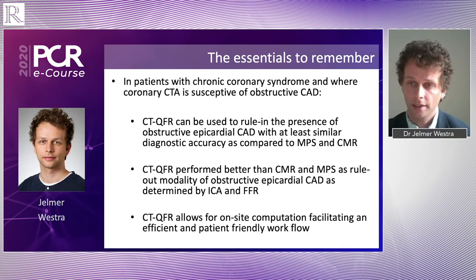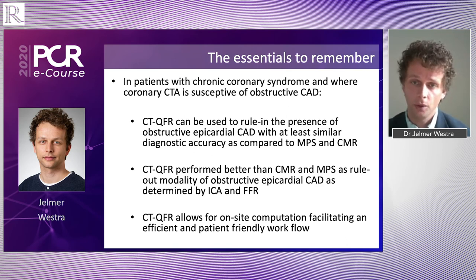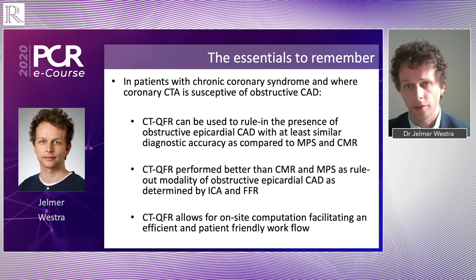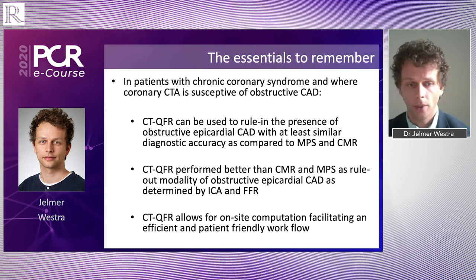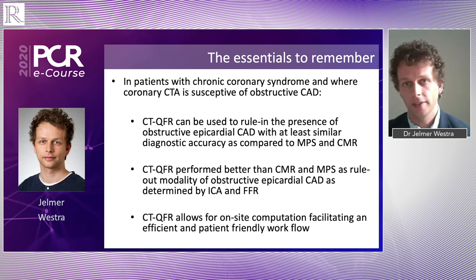The main message is that when looking for obstructive epicardial coronary artery disease in patients with new onset symptoms suggestive of coronary artery disease and with a low to intermediate pre-test risk, if you have a CT scan of good quality that is suitable for post-processing with CT QFR, then it can be used to rule in or rule out obstructive epicardial coronary artery disease with at least similar efficiency as scintigraphy and CMR. The other important message is that this study shows challenges — we had to exclude quite a lot of cases due to suboptimal image quality, especially in calcified lesions and due to motion artifacts. So improvements are needed for the workflow, and we need to see the true feasibility of this technique in prospective studies where CT scans are optimized for post-processing.